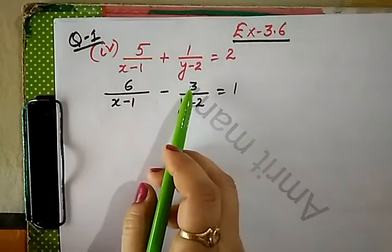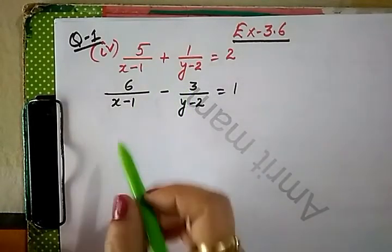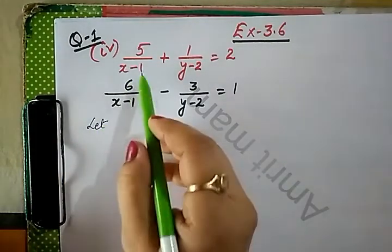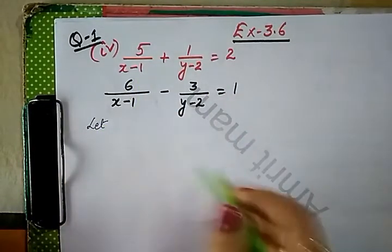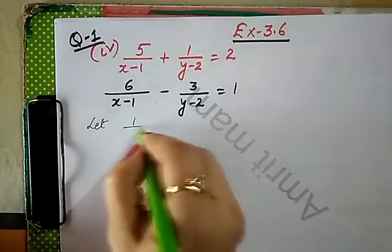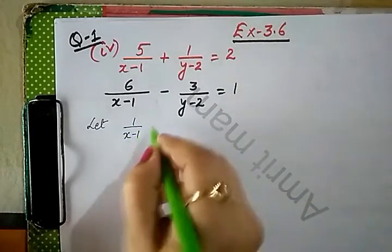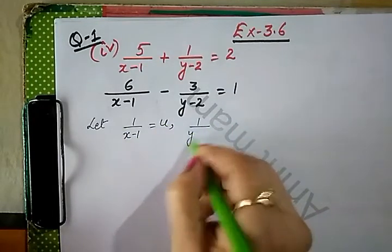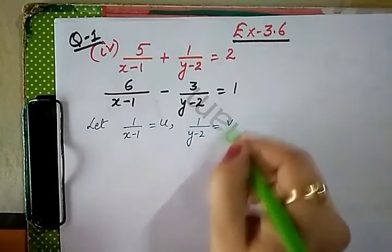Hamare paas jo variable hai, woh denominators mein hai, toh usko solve karne ke liye hamein assume karna padega. Hum lenge, let... sabse pehle dekhenge, dono ke denominators same hai. So hum ne assume kiya, 1 upon x minus 1 as u and 1 upon y minus 2 as v.